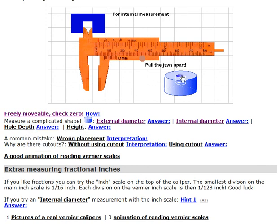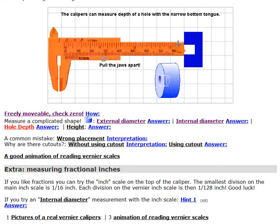The question is, how do you measure how deep the hole is? Well, that's where this part of the caliper is used. You put the bottom of the caliper against the edge of the hole, then you pull the jaws apart so this tongue goes down to the bottom of the hole. When it reaches firmly the bottom of the hole, you can read how deep the hole is.